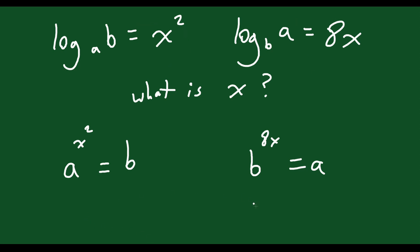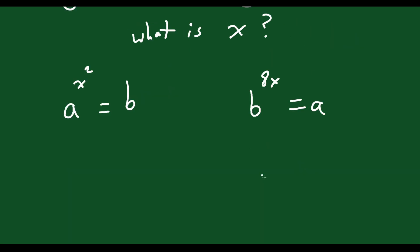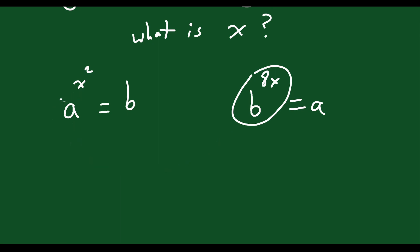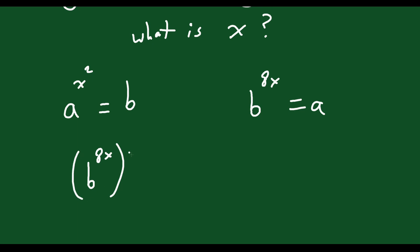Now that they're both in exponential form, we can do some substitution. I could plug the definition for a — so b to the 8x — into this a over here. If you do that, you'll have b to the 8x, to the exponent x squared, equals b.